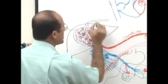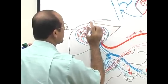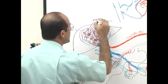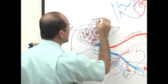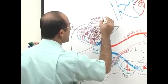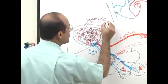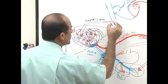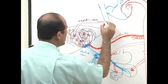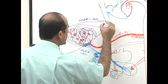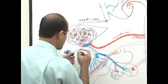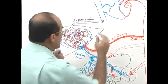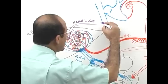The sublobular veins come together and form the hepatic vein, and the hepatic veins eventually drain into the inferior vena cava.